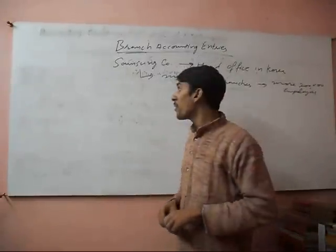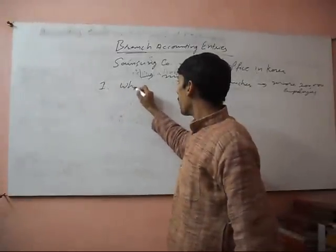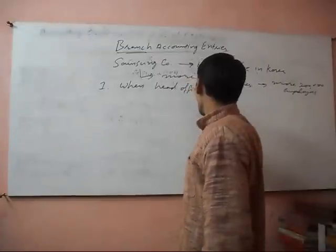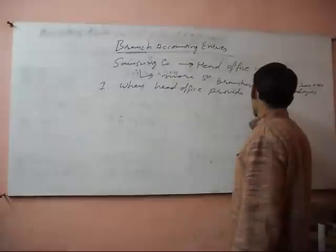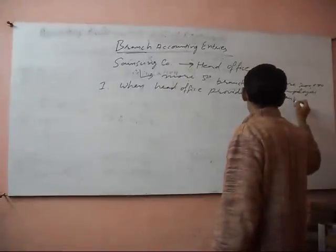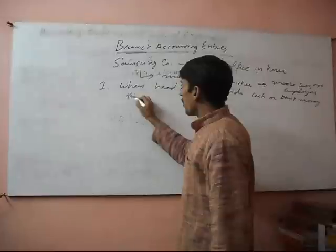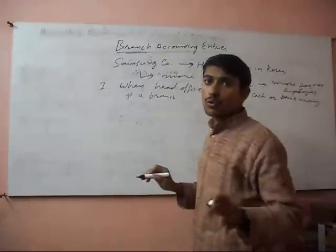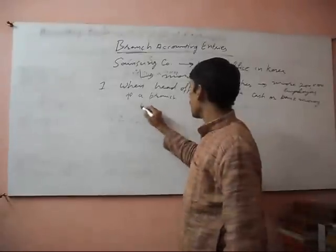As a branch accountant, we should learn how to deal independently in the branch. First of all, when the head office provides cash or bank money to a branch, at that time in the books of the branch we will pass a journal entry.